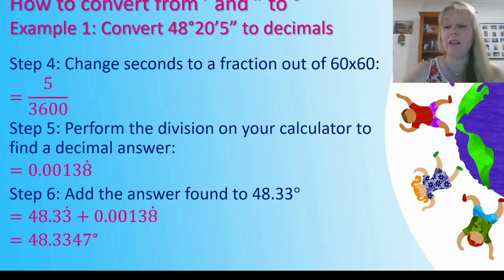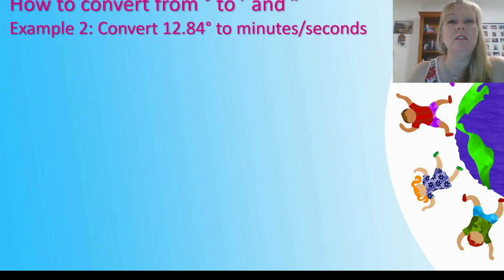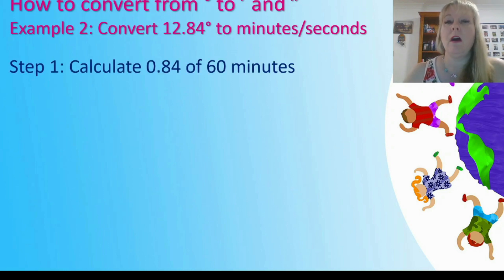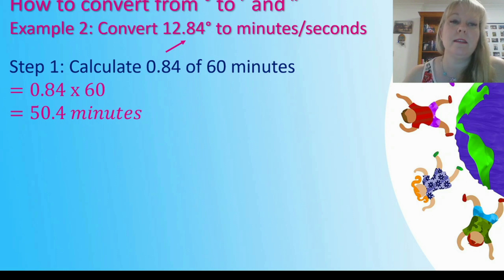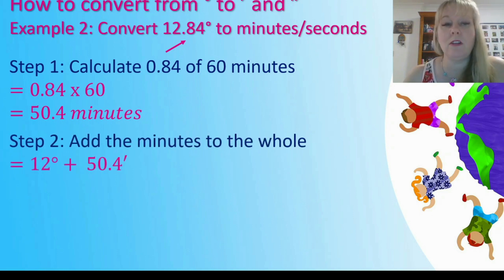So that's how we convert in that direction. Let's convert back to degrees, minutes and seconds. I'm going to ignore the whole number 12, that's our 12 degrees. We focus on the decimal 0.84 of 60 minutes. 0.84 times 60 gives me 50.4 minutes. So I've converted the decimal part into minutes. I can add the minutes part to the whole number. I've got 12 degrees and 50.4 minutes.